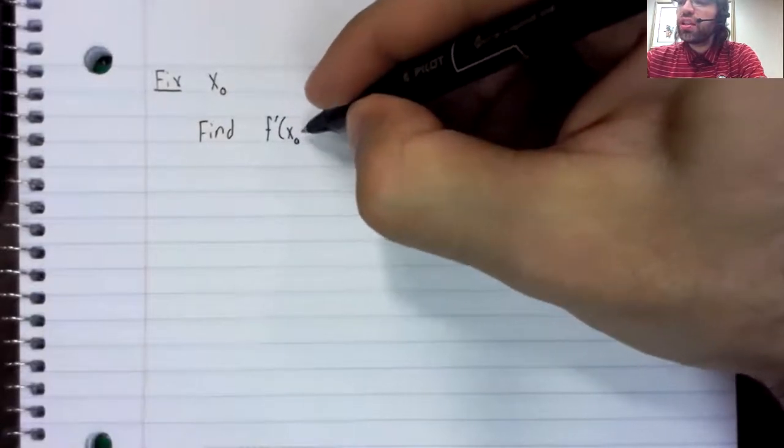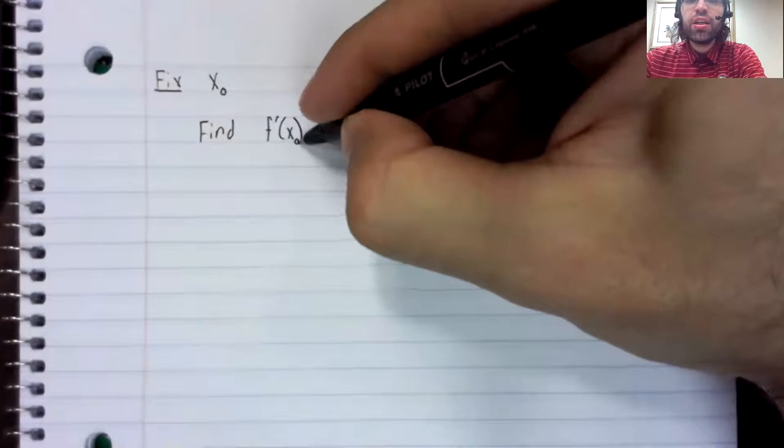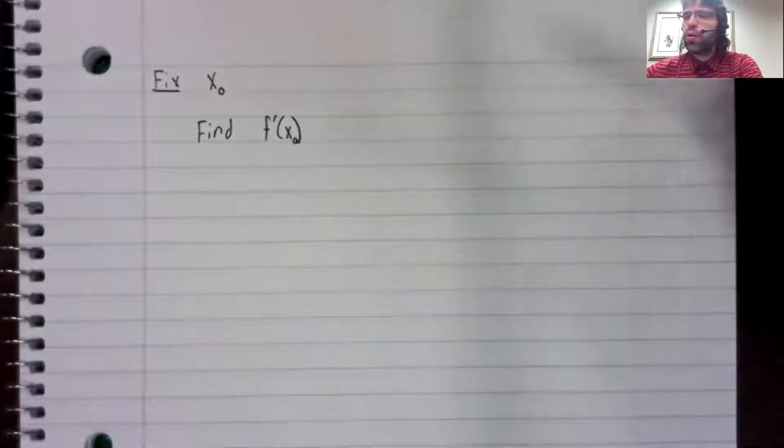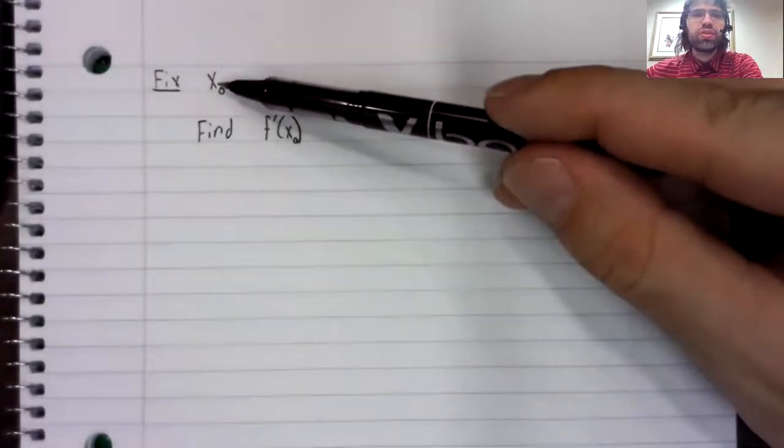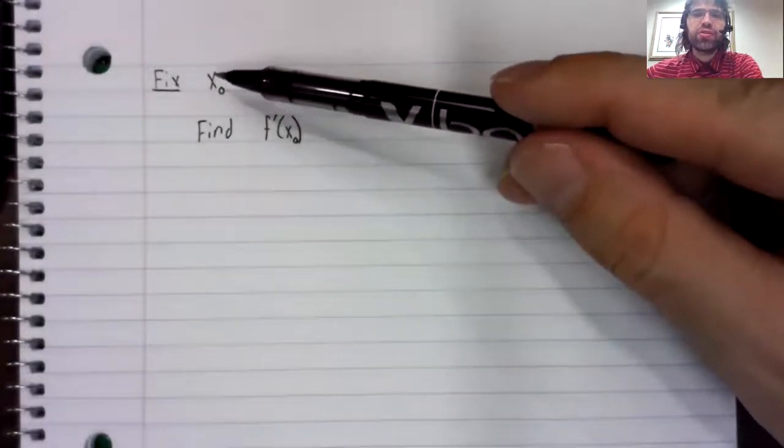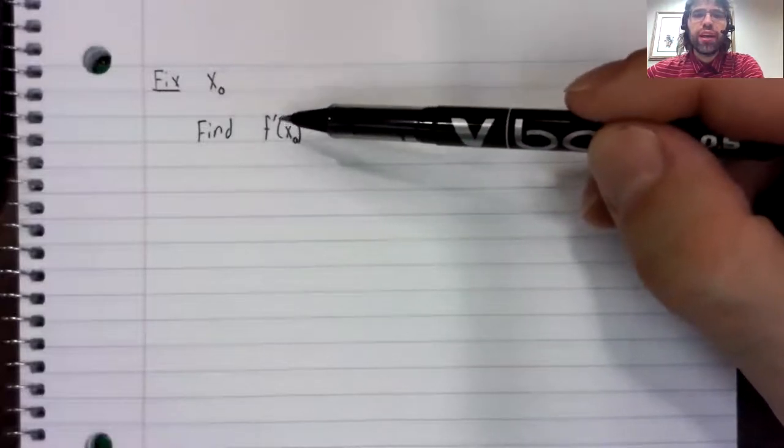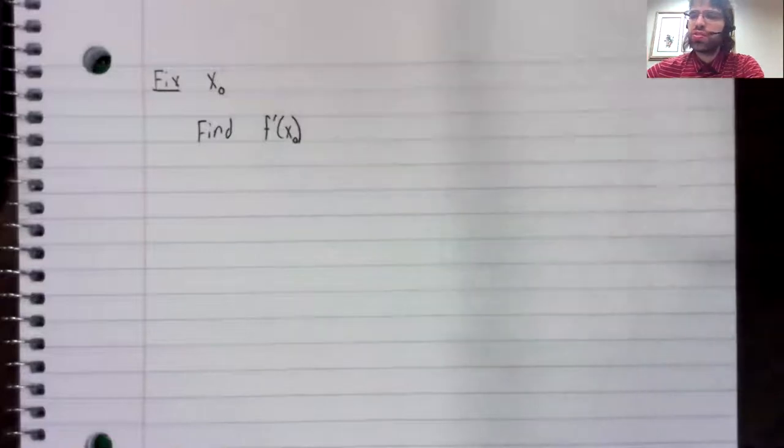which is the instantaneous rate of change at x sub zero. Well, because x sub zero is a fixed constant, this derivative is also a fixed constant.